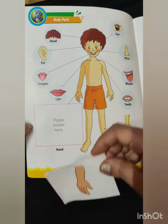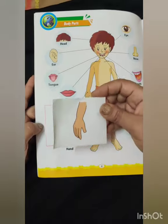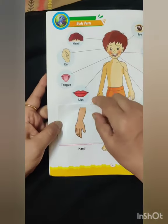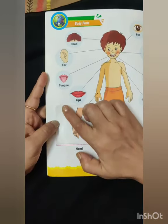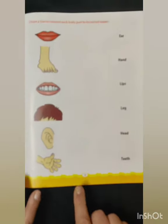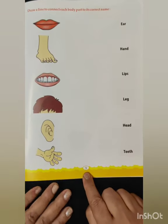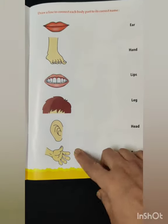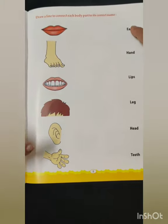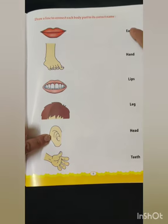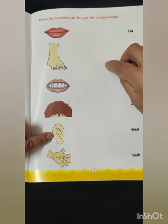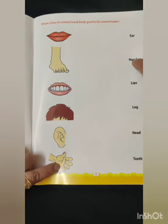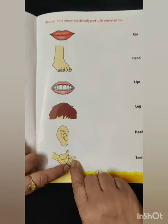Now my dear students, here we will paste a sticker of hand like this. This sticker is on page number 13. Now come to page number 5. Here your parents will help you. Ear — where is ear? This is your ear. Now draw a line and reach here — hand. Where is your hand? This.